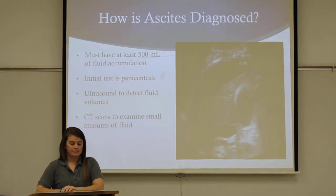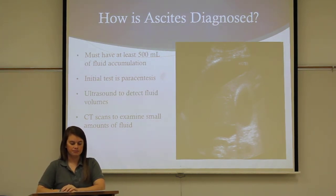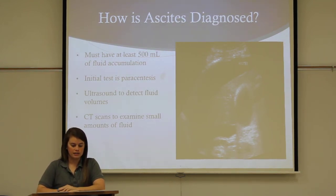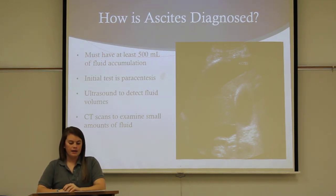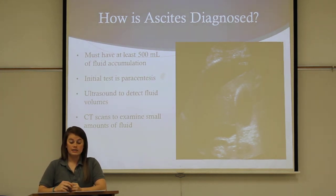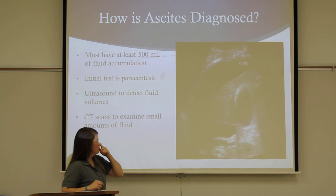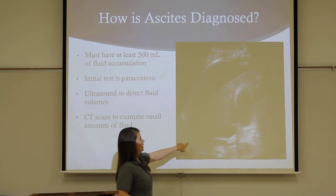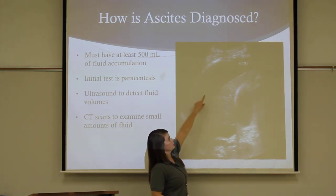Diagnosing ascites requires at least 500 milliliters of fluid accumulation in the abdomen. The initial test that is done is paracentesis, which is the removal of fluid from the abdomen with a needle. This fluid is tested for infection and the cause of ascites. Ultrasounds can also be done to detect fluid volumes, and CT scans can be used to examine smaller amounts of fluid. As you can tell from this picture, this is an ultrasound, and the clear space is actually the fluid buildup.